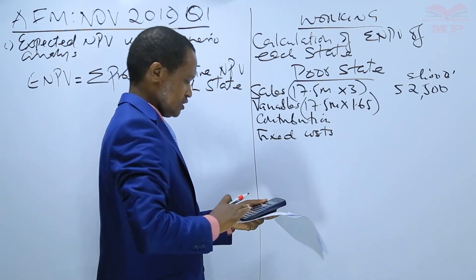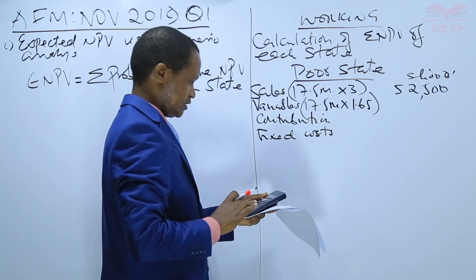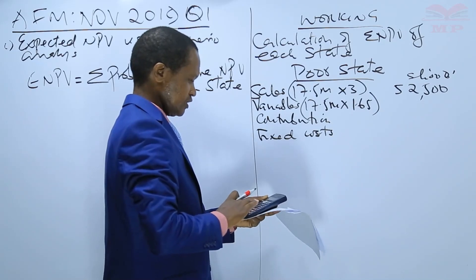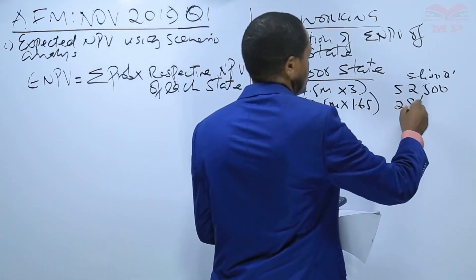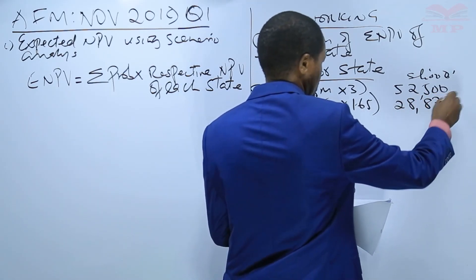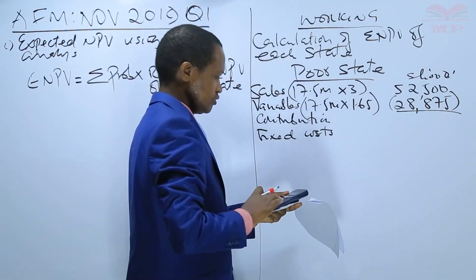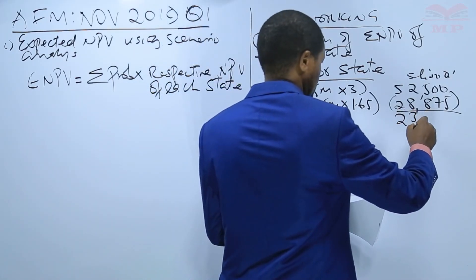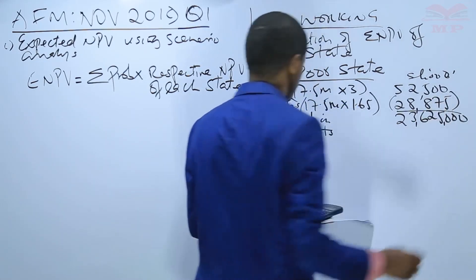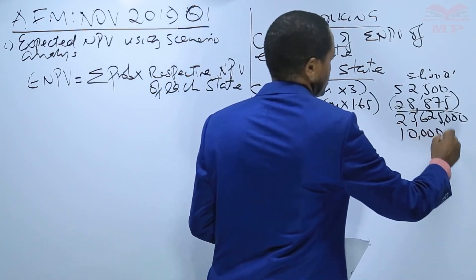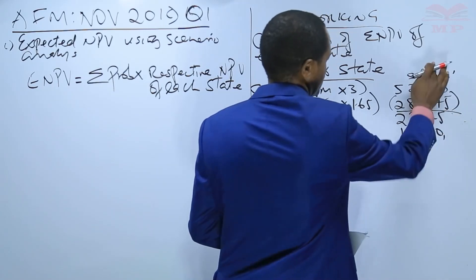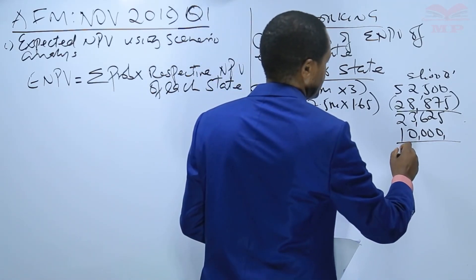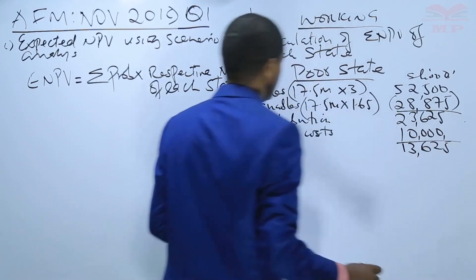Variable cost: 17.5 million units times 1.65 = 28,875,000. Sales revenue: 17.5 million times 3 = 52,500,000. The contribution is 52,500 minus 28,875 = 23,625,000. Deducting the fixed cost of 10 million gives us 13,625,000.